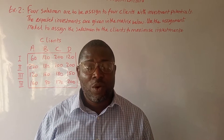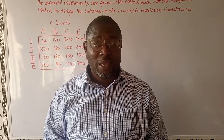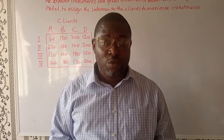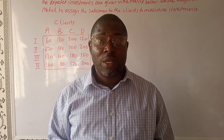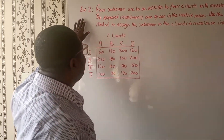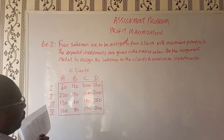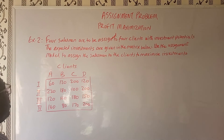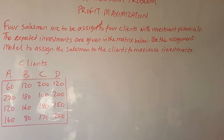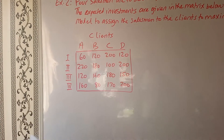Hello there. Welcome to my lecture series on assignment model. We are going to look at one more example on how to deal with profit maximization using the assignment model. Here we have a case of four salesmen asked to be assigned to four clients with investment potentials. The expected investments are given in the matrix below. Use the assignment model to assign the salesmen to the clients to maximize investments. So this is a case of maximization.